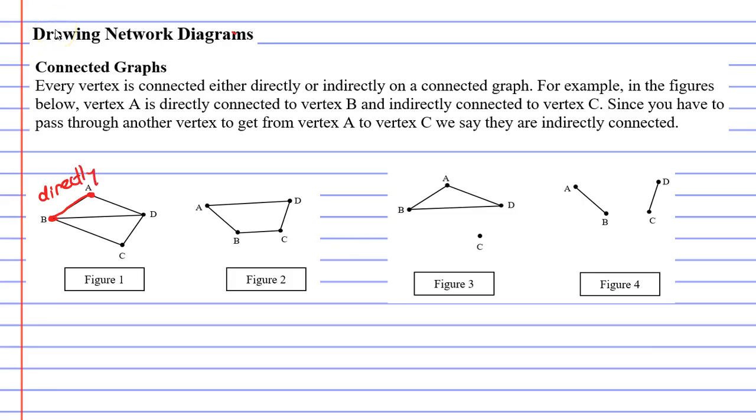We compare vertex A with vertex C. They are indirectly connected because in order to get from A to C I have to pass through another vertex. I have to pass through either vertex D or I have to pass through vertex B to get there.